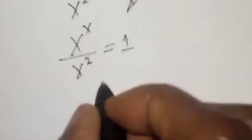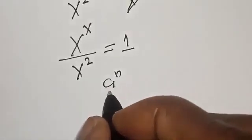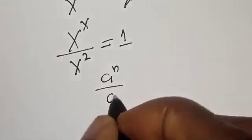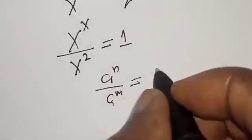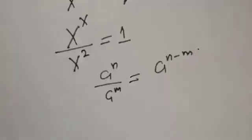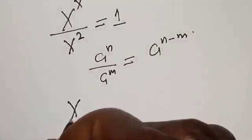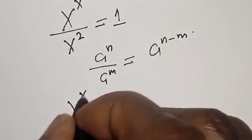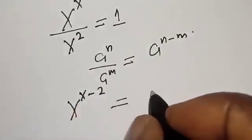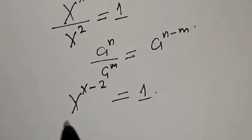Now remember that if you have a raised to power n over a raised to power m, this is the same thing as a raised to power n minus m. Then our left hand side becomes s raised to power s minus two is equal to one.